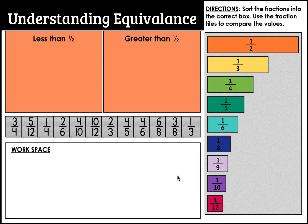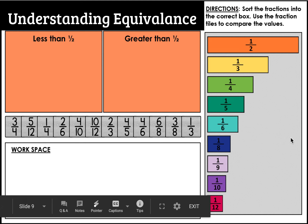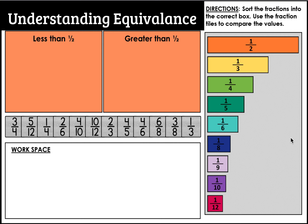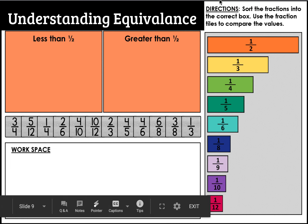What you're going to do next in the math module is complete your practice for today, called 'Understanding Equivalence.' On the right-hand side you've got some fraction bars that you can use as your models — you can drag them to the white workspace below. You'll need to look at the gray fractions and test them out to see if they are greater than half or less than half. When you're done, drag the fractions into the box that says 'less than one-half' or 'greater than one-half,' and then hit the submit button. Good luck!